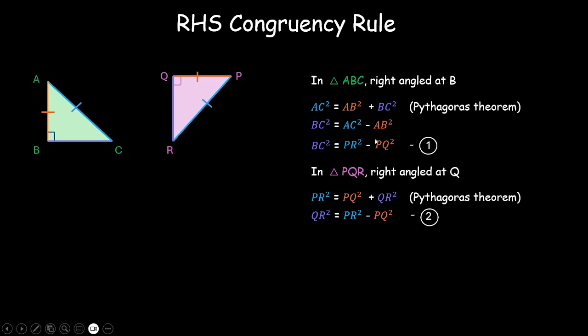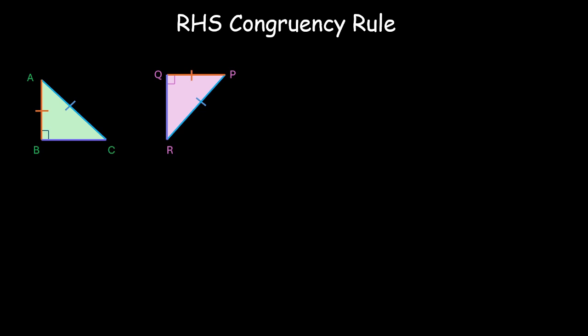Now, in both the equations 1 and 2, the right hand side is equal. So, obviously, the left hand side is equal as well. That means QR square is equal to BC square, which means that QR is equal to BC. So, that means that this third side QR is equal to BC. So, now in these two triangles, ABC and PQR, all three sides are equal to each other. AB is equal to PQ, BC is equal to QR and AC is equal to PR. Therefore, by SSS rule, side side side, these two triangles are congruent.